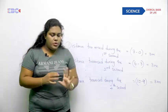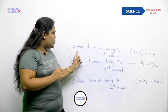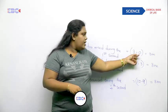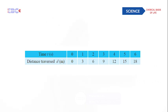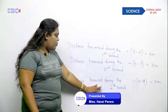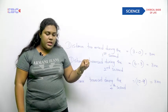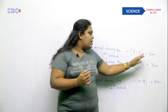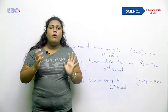The table shows the distance traversed by an object at different time instances. To find the distance traversed during the first second, subtract 0 from 3, giving 3 meters. During the second second, subtract 3 from 6, again 3 meters. Every second interval also gives 3 meters. This shows the object traversed 3 meters per second consistently — meaning it moved at a uniform or constant speed.